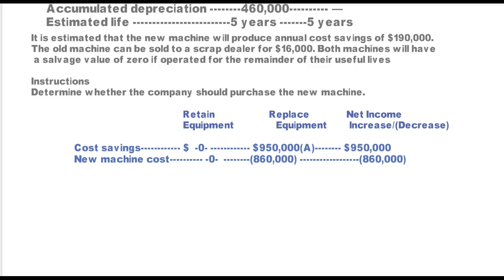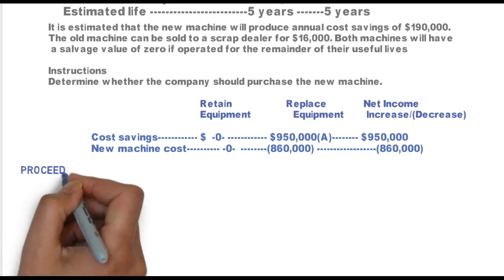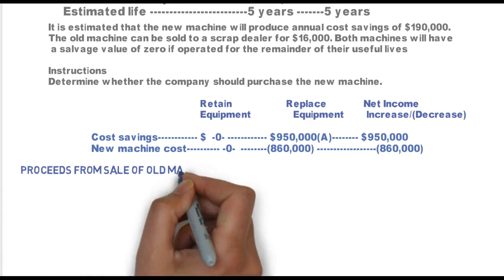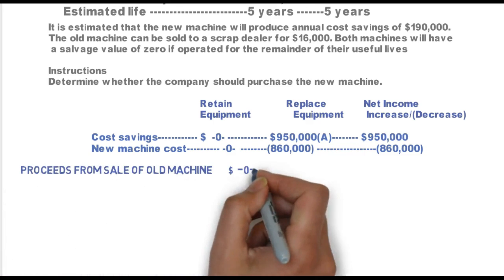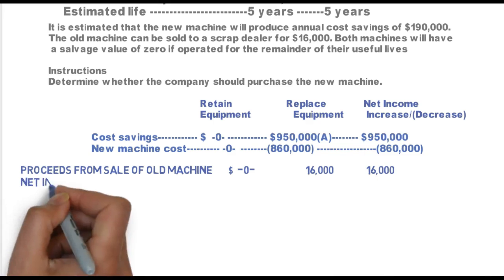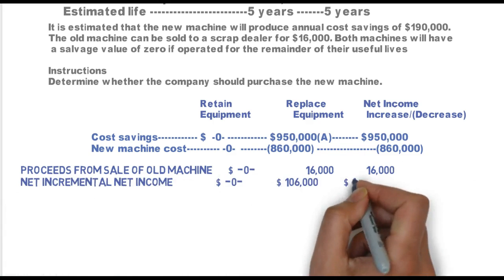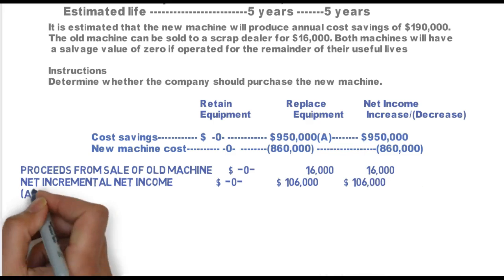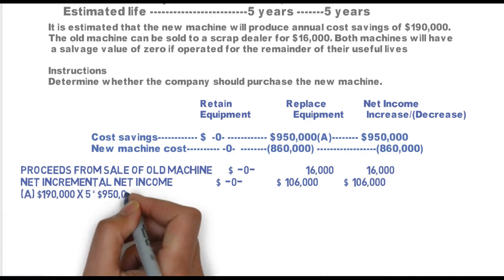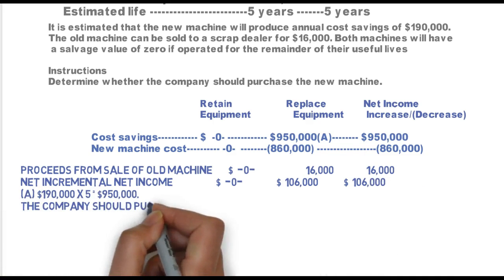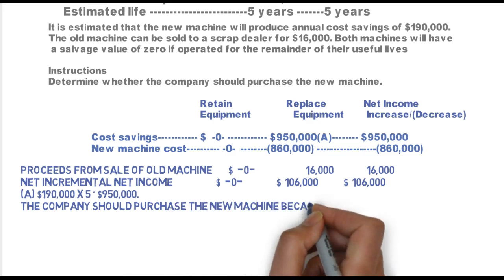The new machine cost is also relevant. It's a cash outflow, so that's why it's bracketed — it's $860,000. Proceeds from the sale of the old machine: if I retain, it's zero; if I replace, it's $16,000. The net incremental net income is $106,000 for replace.